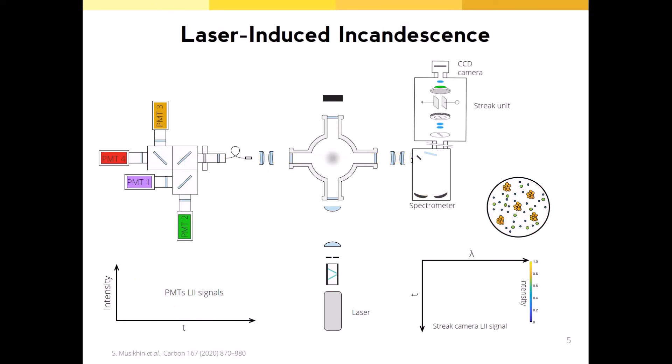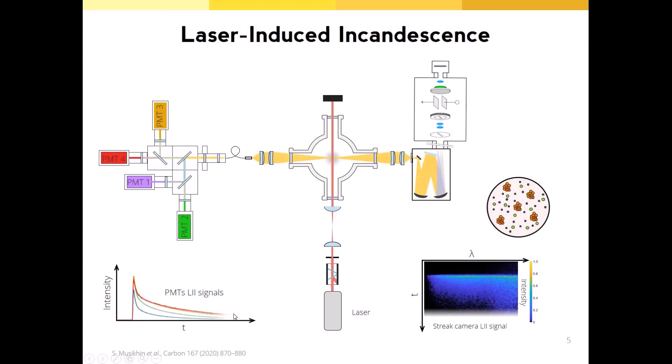Then particles return to the ambient gas temperature via various heat transfer mechanisms. Through the analysis of these detected signals, we can infer the quantities of interest, such as graphene aerosol concentration and particle surface area.